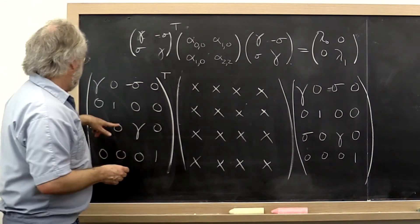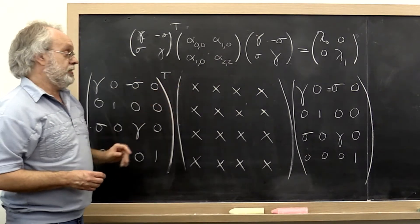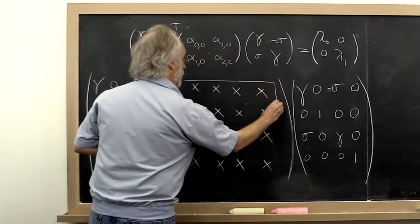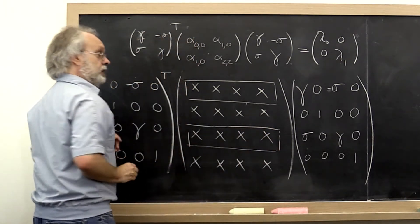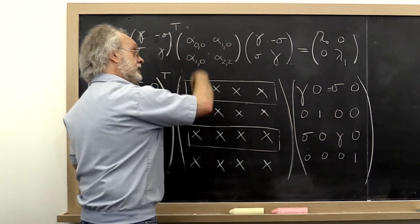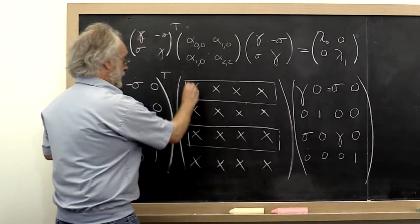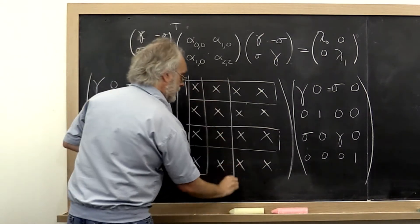Now if we look at how this matrix acts on that matrix, what you notice is that it only affects these two rows. All the other rows are left alone. And if you look at how this matrix affects it from the right, it affects it like that.